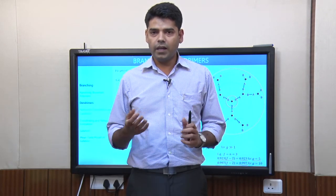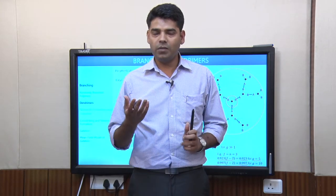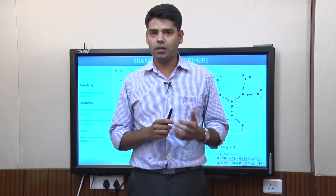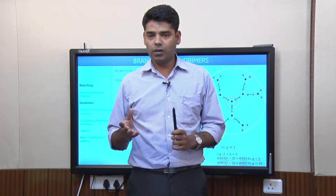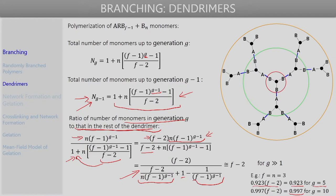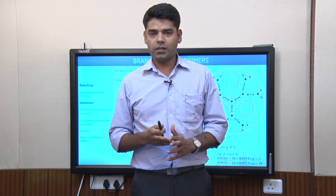As generation increases, the number of monomer units on the dendrimer surface increases significantly, eventually leading to crowding that limits the largest attainable dendrimer size. Inside the dendrimer there is considerable void space, while the surface is densely populated with functional groups. This unique combination — crowded surface with interior void space — gives dendrimers interesting properties. The many surface functional groups can be further functionalized for applications such as therapeutics and drug delivery.